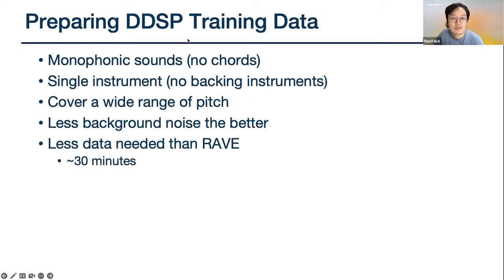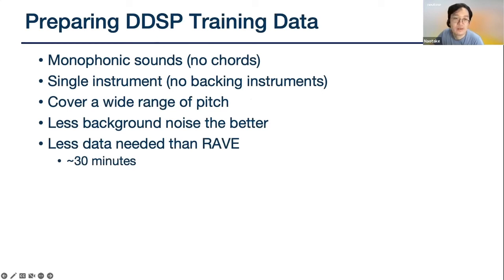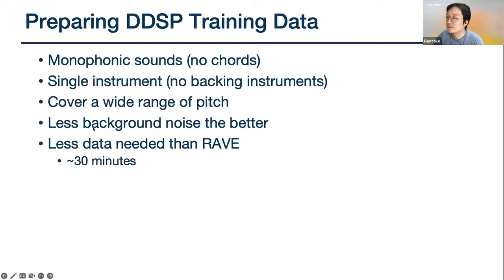About the DDSP training data: you have to prepare a dataset of monophonic sounds with a single instrument, and hopefully cover a wide range of pitch. Your model would only work in some range of pitch, so if that's fine you don't have to prepare that sort of data. Background noise is not ideal. Generally you need a lot less data than RAVE — about 30 minutes is fine, maybe even less.